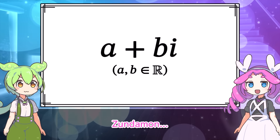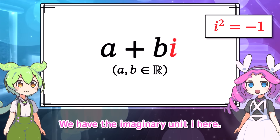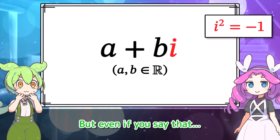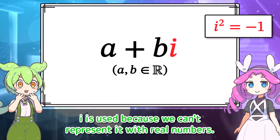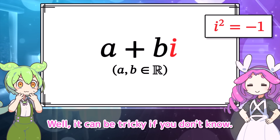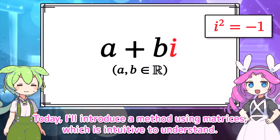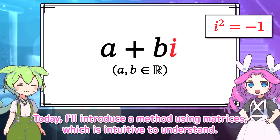I see. But Sinduman, we have the imaginary unit I here. We need to construct this with real numbers. But I is used because we can't represent it with real numbers. Well, it can be tricky if you don't know. There are several ways to construct the complex numbers using the real numbers.